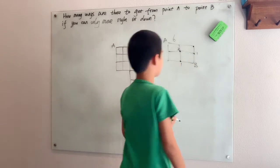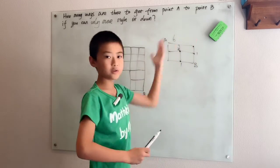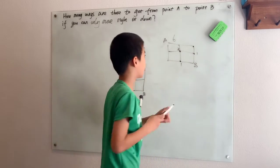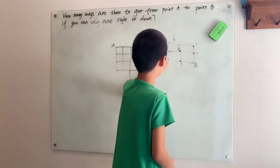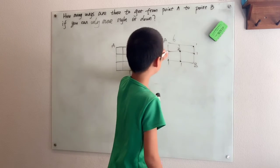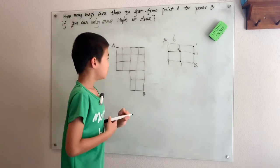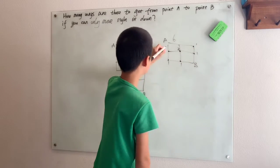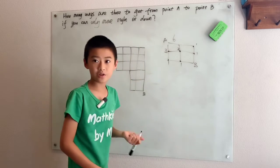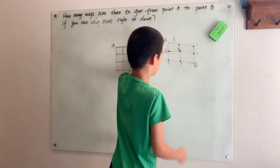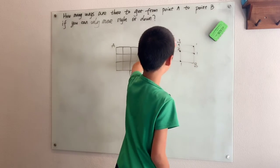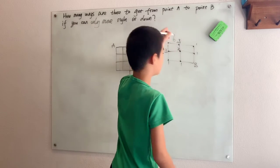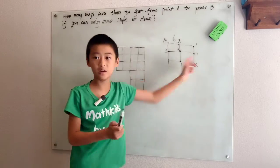Well then say we started up here. Well there's only one way to get back, because the only thing you can do is go down and there's only one way back from there. And same thing with this corner. And now, well this point, well then we just have two ways if you go right, one way if you go down. So one plus two, three ways to get back. So here, two plus one, three ways. And all the way back there we have three plus three, six ways again to get from point A to point B.